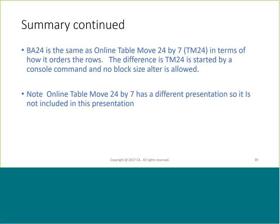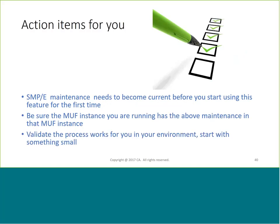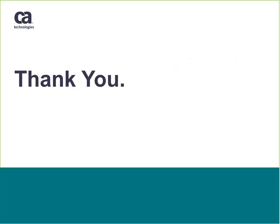BA24 is similar to another facility called TableMove, which we'll cover in another presentation this Wednesday. To get started: the very first thing you should do is pull down all maintenance from CSO, get current on maintenance for the MUF you want to run this command in, bring everything down you can, and run that maintenance when you first start this process. You should complete this before you start using BA24. Being a new feature with a lot of code involved in the packaging, we want you to be current before starting.